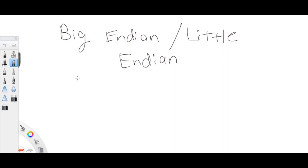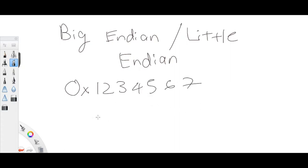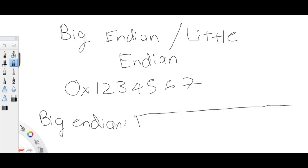I'll just show you guys an example. Let's say I have the number 1234567. If you're going to store this in big endian, the bytes in memory are kind of like blocks of memory like this. So if you're going to store every two bytes here, it would be 01 first.